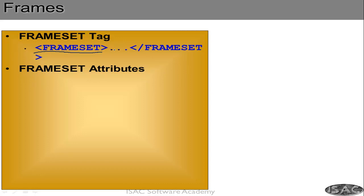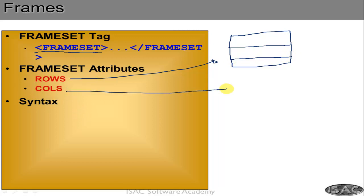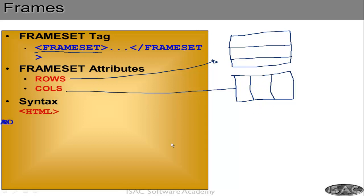Frameset has attributes like rows and columns — how many rows you want and what percentage each row will take. If it is a vertical frame it will be columns; if it is a horizontal frame it will be rows. So rows would look like frames stacked horizontally, and columns would look like frames arranged side by side.